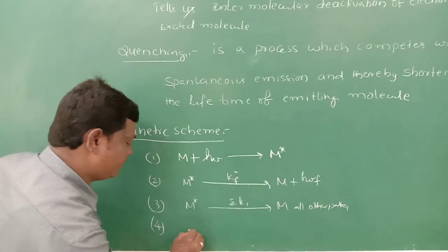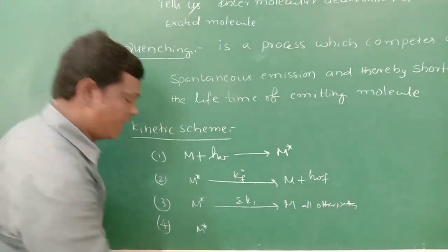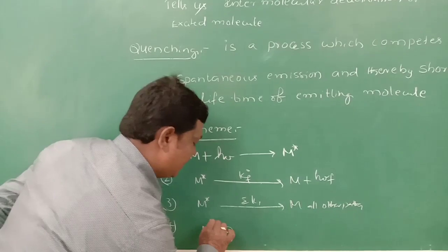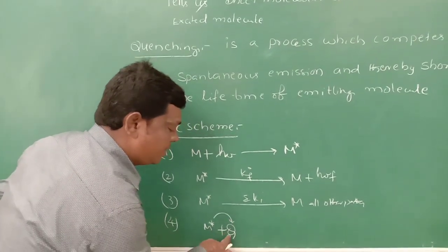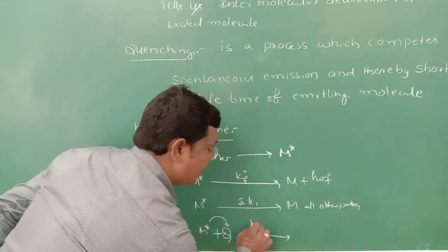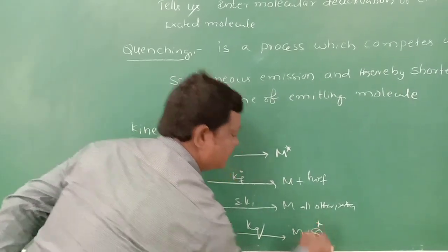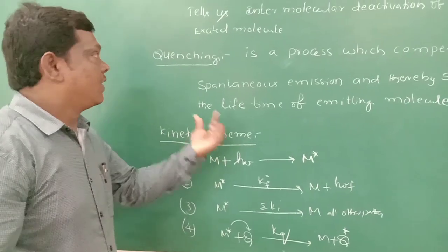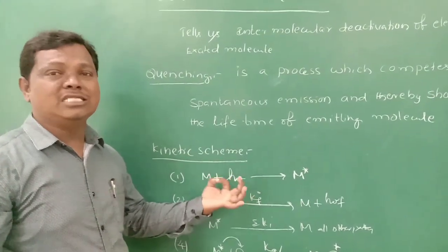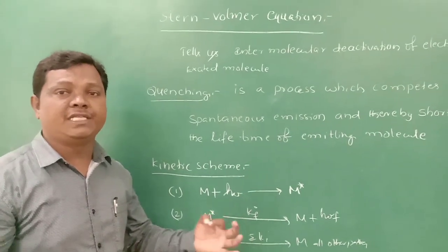The fourth step: the electronically excited molecule M* interacts with quencher Q, and the energy is absorbed by the quencher with rate constant KQ, giving M plus Q*. This is the kinetic scheme for quenching — collisional quenching — also known as intermolecular deactivation of photophysical reactions.